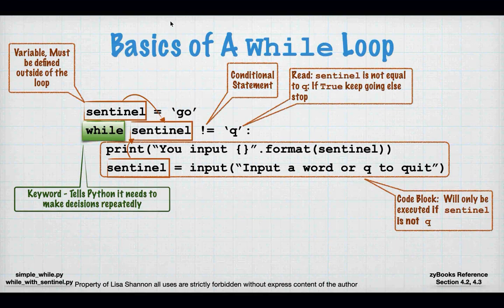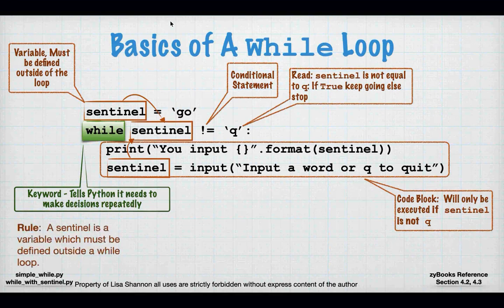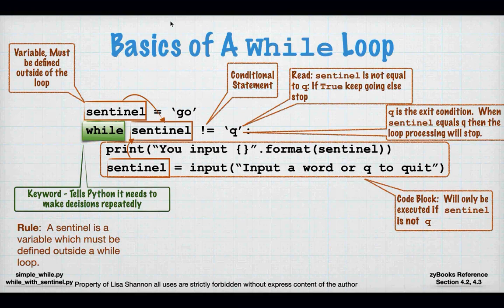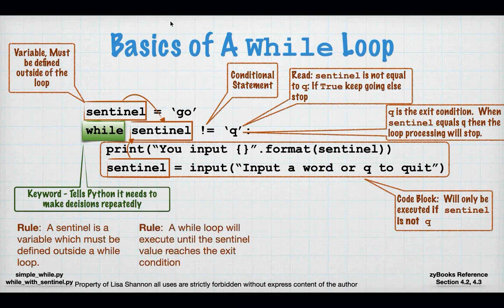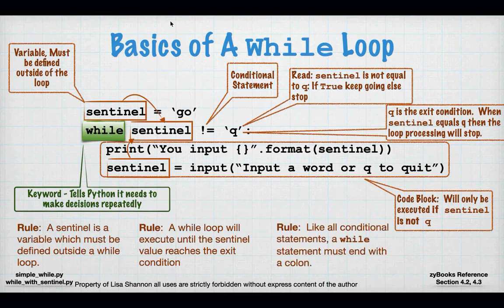The way to read the while line is: 'sentinel is not equal to Q — if true, keep going, else stop.' That's really how you read that one line of code. A sentinel value is a variable which must be defined outside the loop, and Q is the exit condition. When the sentinel equals Q, processing will stop. A while loop will execute until the sentinel value reaches the exit condition. Like all conditional statements, while must end with a colon.